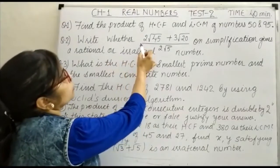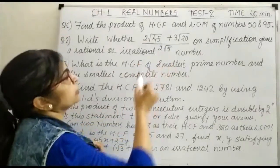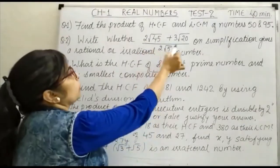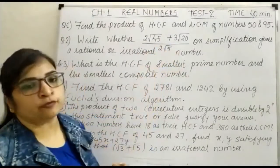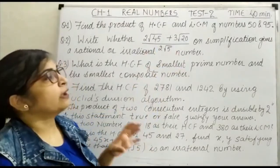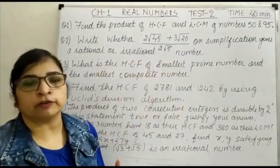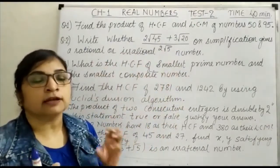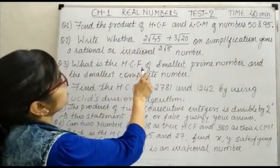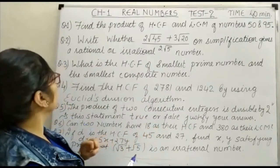Your next question is: write whether (2√45 + 3√20)/2√5 on simplification gives a rational or irrational number. That means you have to simplify and then tell whether the answer is a rational number or an irrational number.